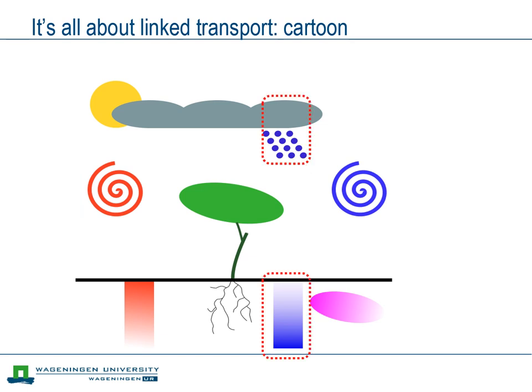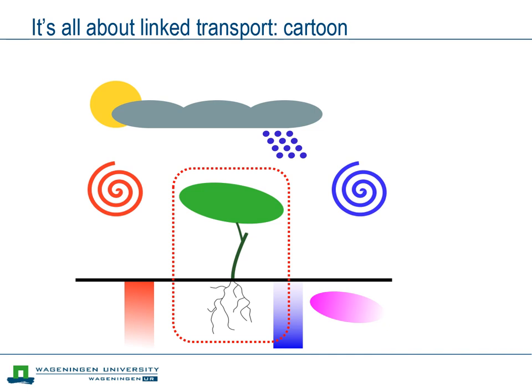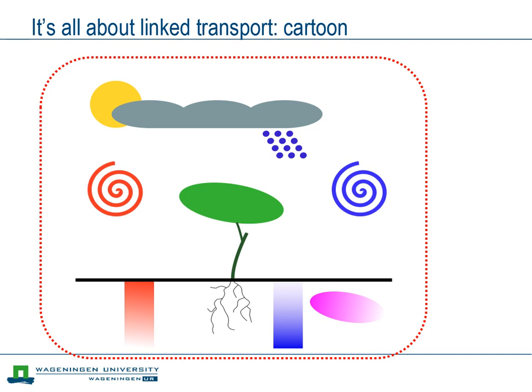There is water transport in the soil, determined by rainfall but also by the characteristics of the soil. There is transport of solutes in the soil, processes in and around plants both above ground and in the soil. And finally, we will connect all of these processes together.